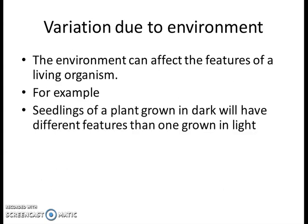A seedling of a plant grown in the dark. If we grow a seedling in a dark atmosphere, it will have different features than one grown in the light — there will be variation between them. This variation is because of the amount of light. Just as in our previous lesson we took the example of apples grown in different places on the same tree being different, if we grow one seedling in a dark place and another in a light place, there will be variation between them.